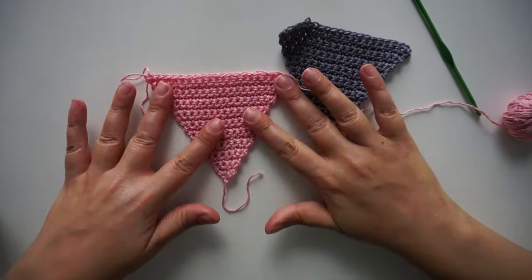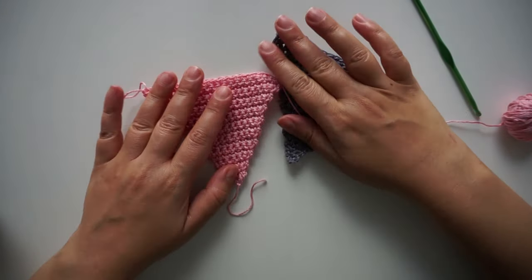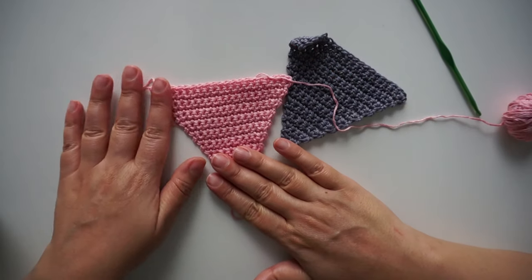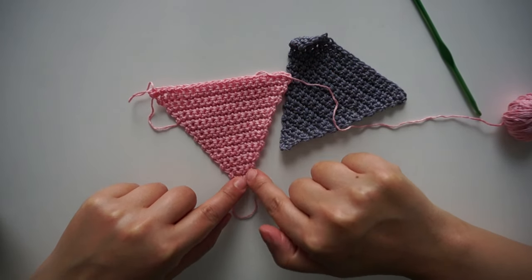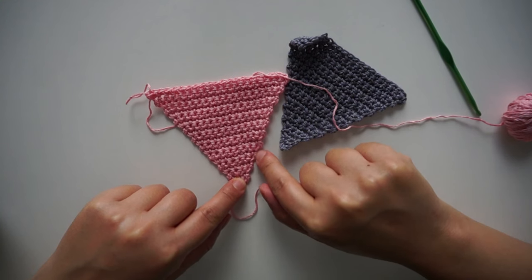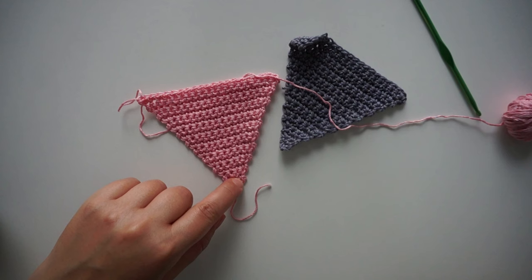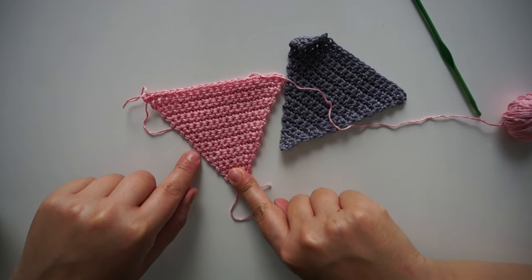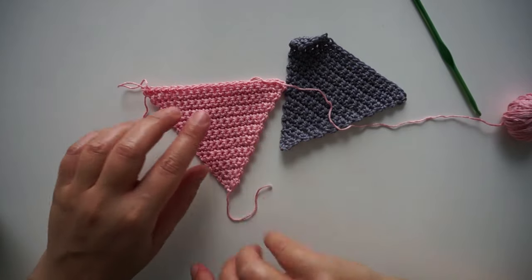And this is the final result of the triangle. It looks the same like the gray one and it's very easy to achieve. Like we said, we start the row with chain one and a single crochet in the same stitch as the chain one. And then we finish every row with two single crochet in the last stitch. And this is what you obtain.